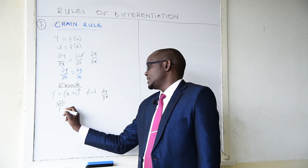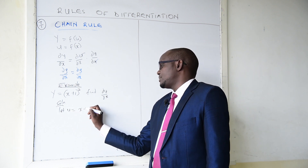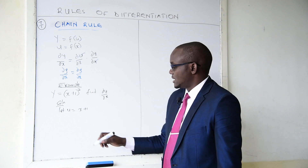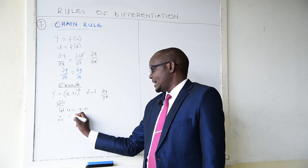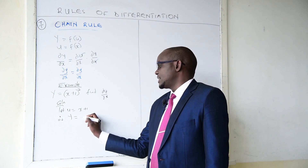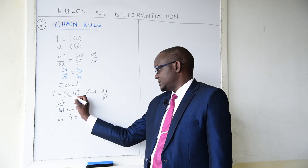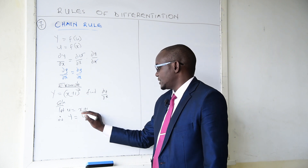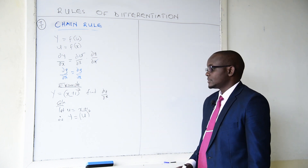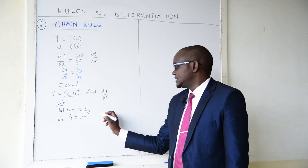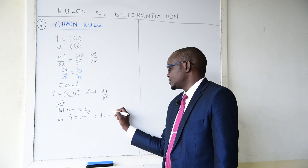We say let u be equal to x plus 1. Therefore y can also be written as u squared, since u replaces x plus 1. So y equals u squared.